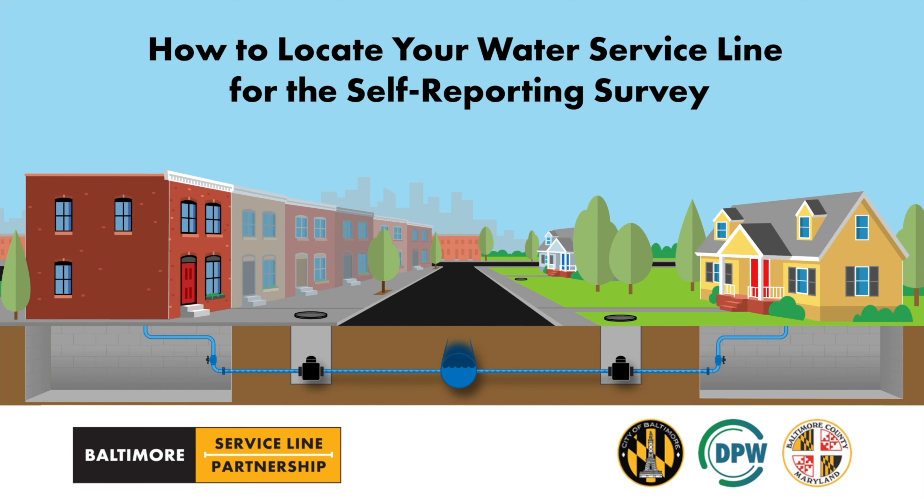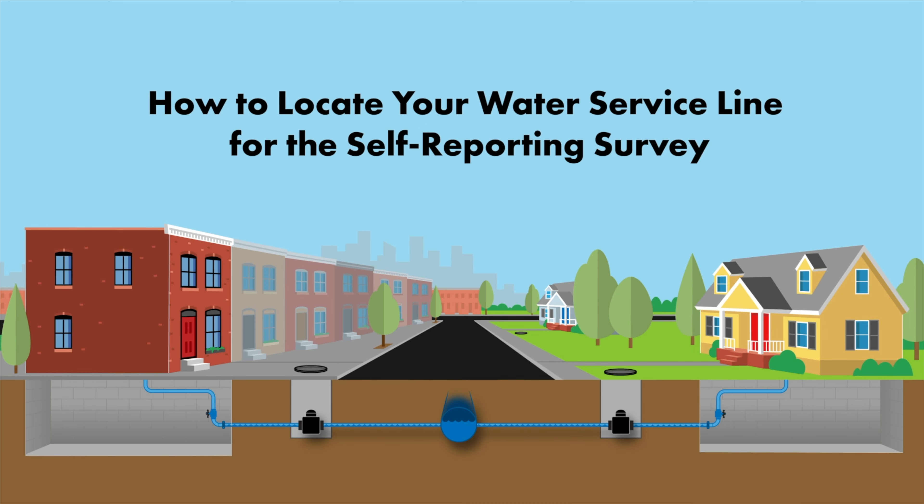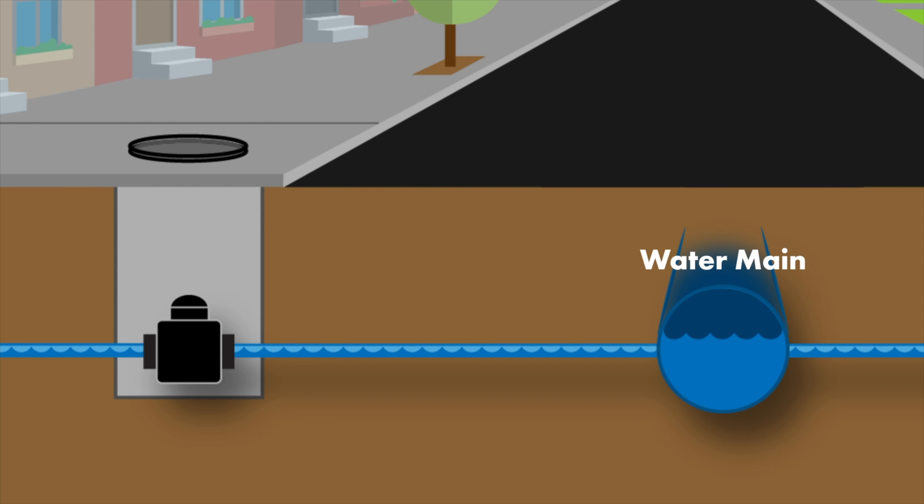Baltimore City Department of Public Works delivers drinking water to homes and businesses through a network of water mains throughout the city and county. A water service line is a pipe that carries water from the main through the meter and into your house.